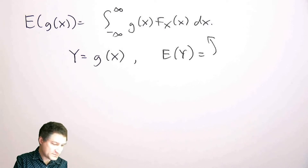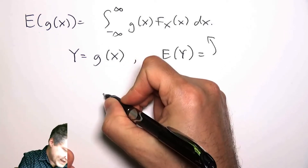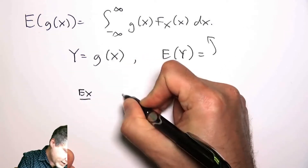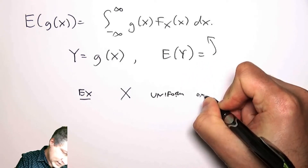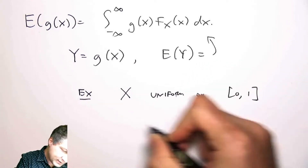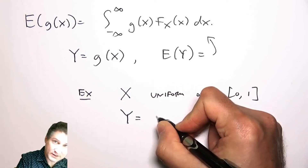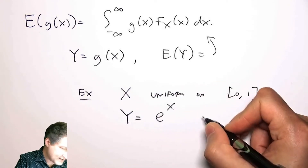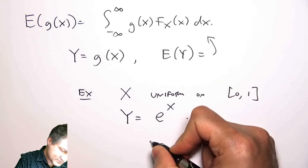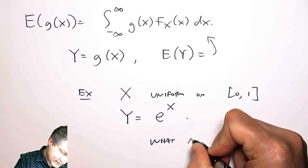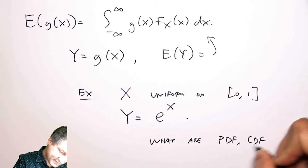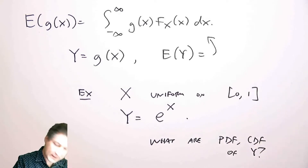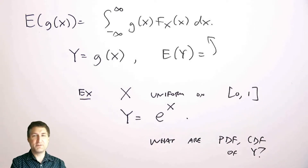I'm going to take you through that process. Suppose X is a uniform random variable on the interval [0,1] and I define a new random variable Y = e^X. What are the PDF and CDF of Y?